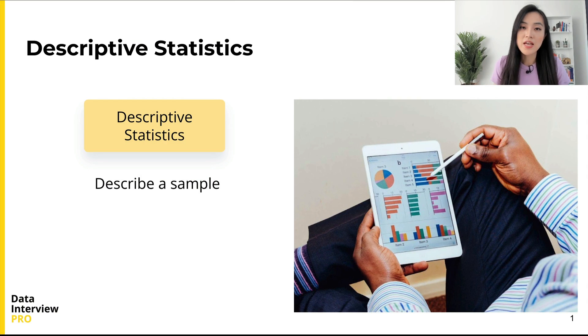In statistics, there are descriptive and inferential statistics. As the name suggests, descriptive statistics are used to describe a sample. Such statistics are very straightforward. You simply decide on the sample that you are interested in, obtain the data, and then calculate the summary statistics of the data.